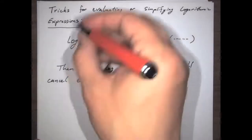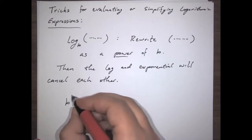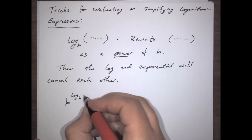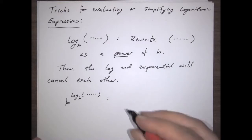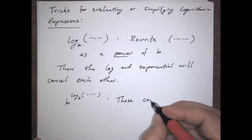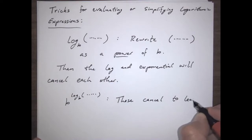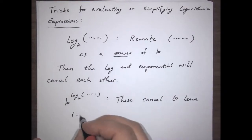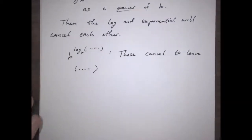Alternatively, if we have b to the power of the log base b of something, those just cancel each other straight away — these cancel to leave just whatever was in the exponent.